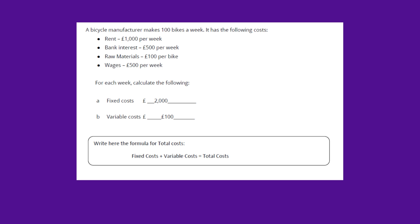We have a variable cost of £100 per bike. We've been asked to give the formula for total costs, which is: fixed costs plus variable costs equals total costs. You need to be up to speed with your definitions and how to apply those formulas.